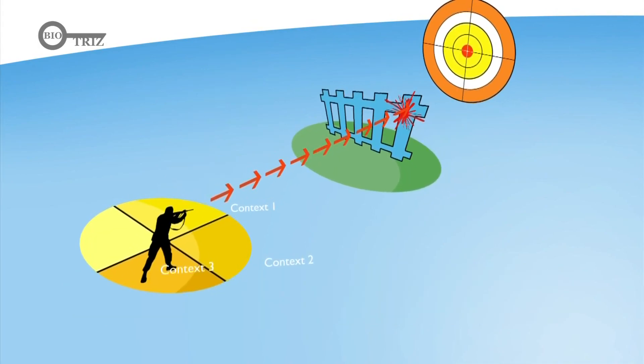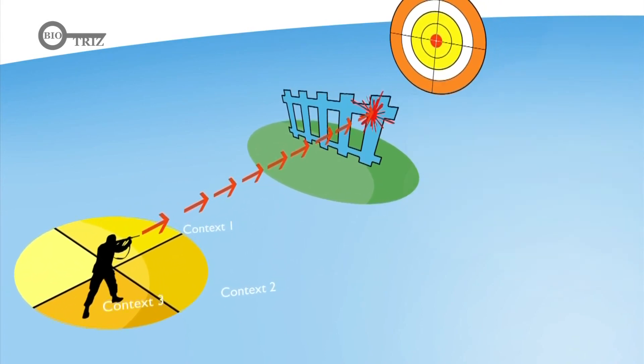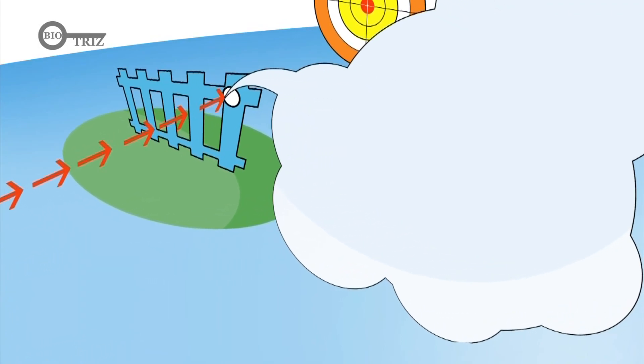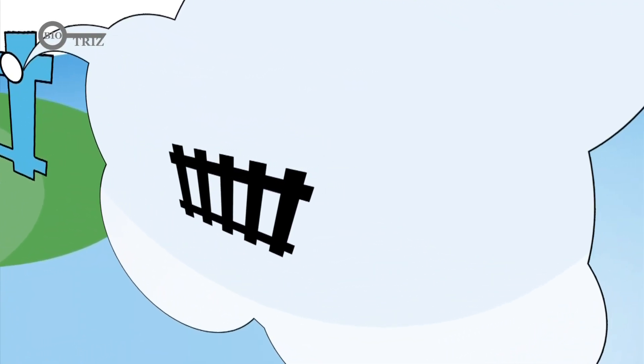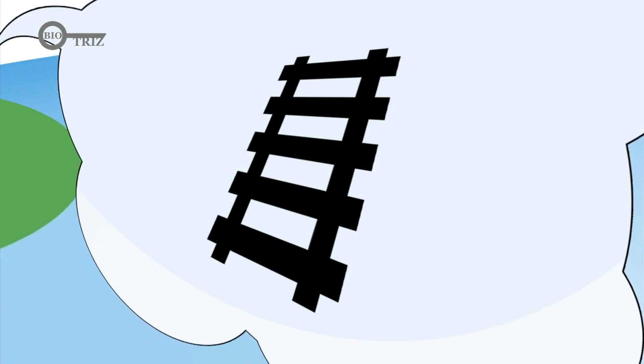The conflict between what properties of an object you want to improve, and what properties do not allow such an improvement, represents the model of a problem. The sharper the conflict, the more impossible the resolution looks. Win-win solution only looks impossible until we turn a fence into a ladder.